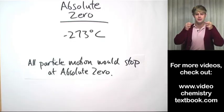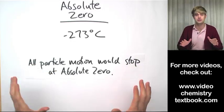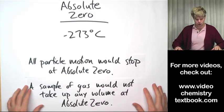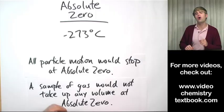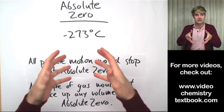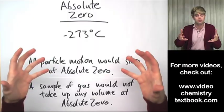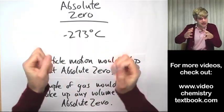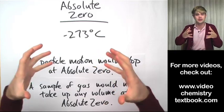So, because none of the particles are moving anymore at absolute zero, something else interesting happens. And that's that a sample of gas would not take up any volume at absolute zero. And that's because if we have a balloon that's filled with gas or something like that, it has volume because those gas particles are flying around and are bouncing against the inside of the balloon and that's what's inflating it and giving it volume.